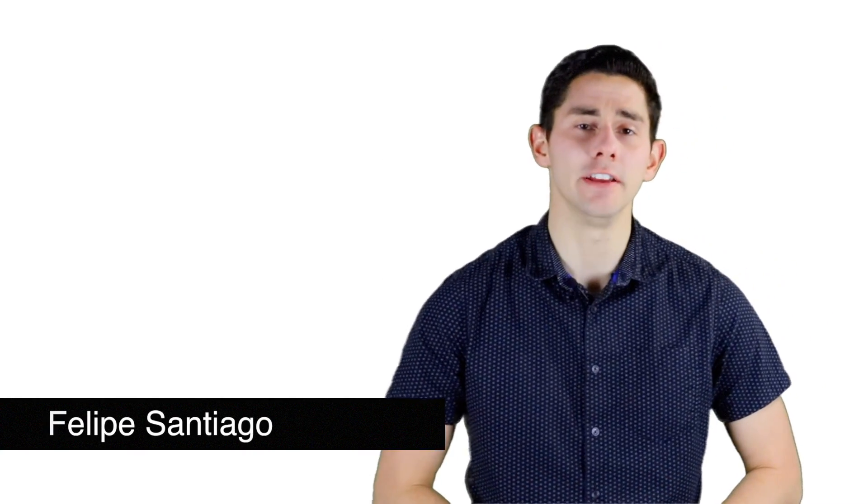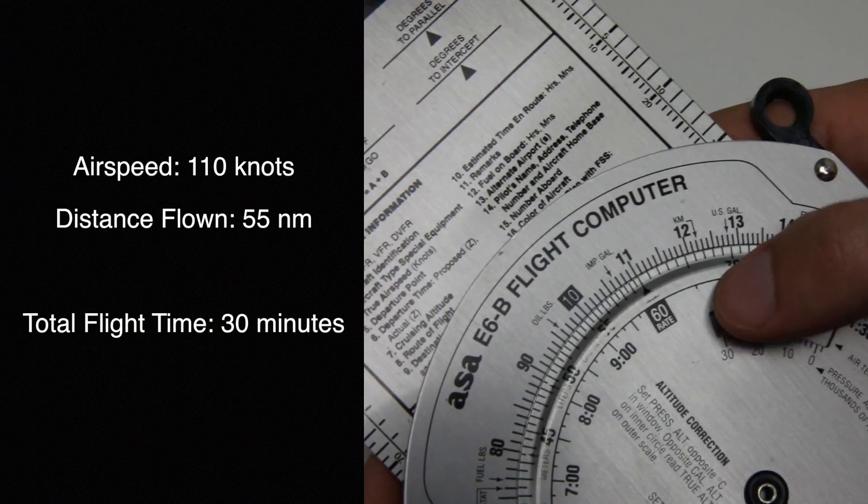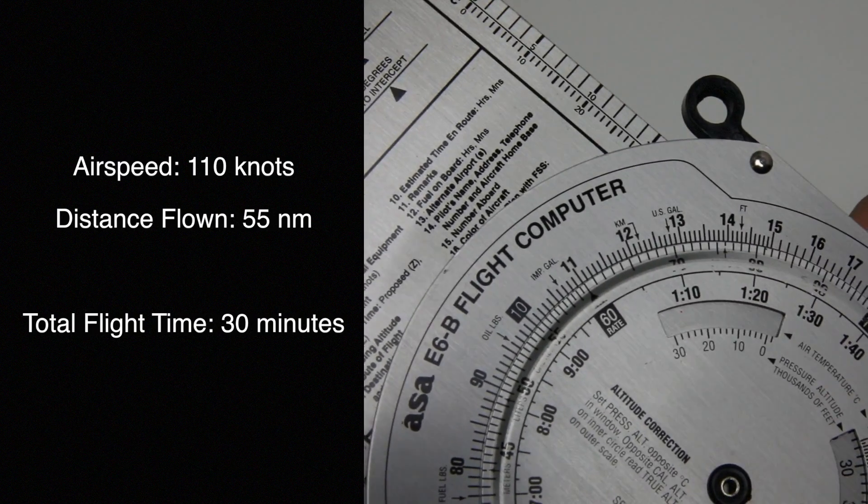Welcome back aviators, let's take a look at our E6B. To calculate flight time, we have to set our rate to 110 knots and our distance is going to be 55 miles.